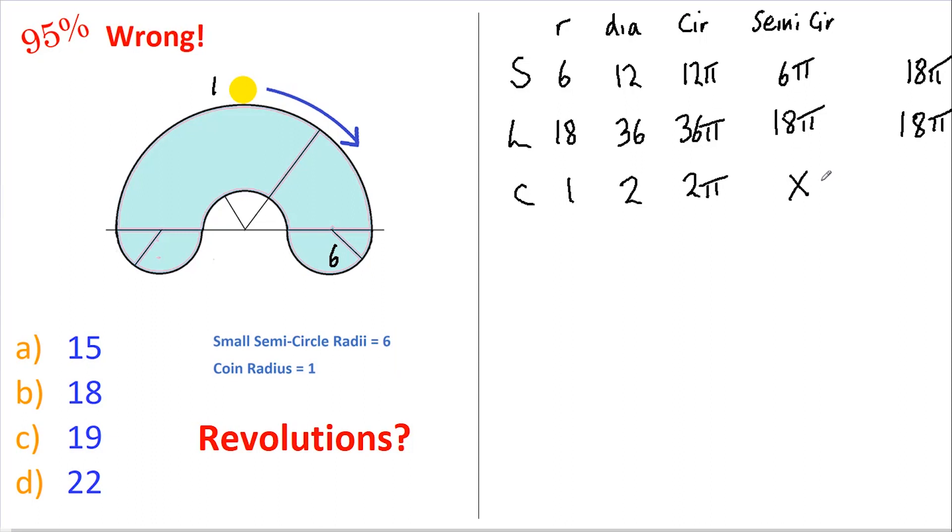Have you got everything right so far? Are you sure? Okay, total length of the track: 18π plus 18π, which is 36π. We divide that by the circumference of the coin, which is 2π, which gives us a grand total of 18.